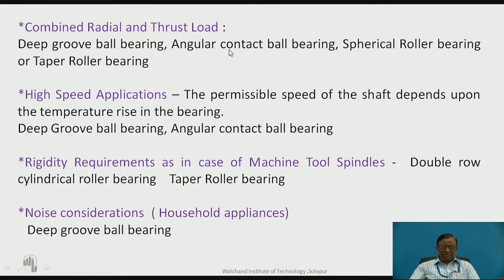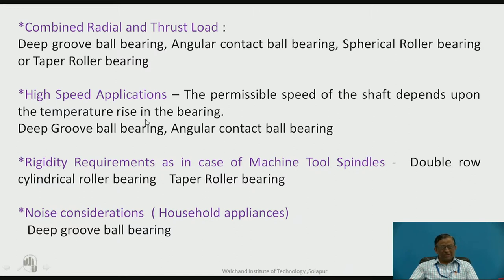If thrust load is very high along with high radial load, then angular contact ball bearings can be used. For further heavy duty construction, spherical roller bearings or taper roller bearings can be used for very high combined loads. For high speed applications, the permissible speed depends upon temperature rise in the bearing due to friction. Ball bearings have comparatively less friction, so deep groove ball bearings are better; for heavier combined loads at high speed, angular contact ball bearings can be used.